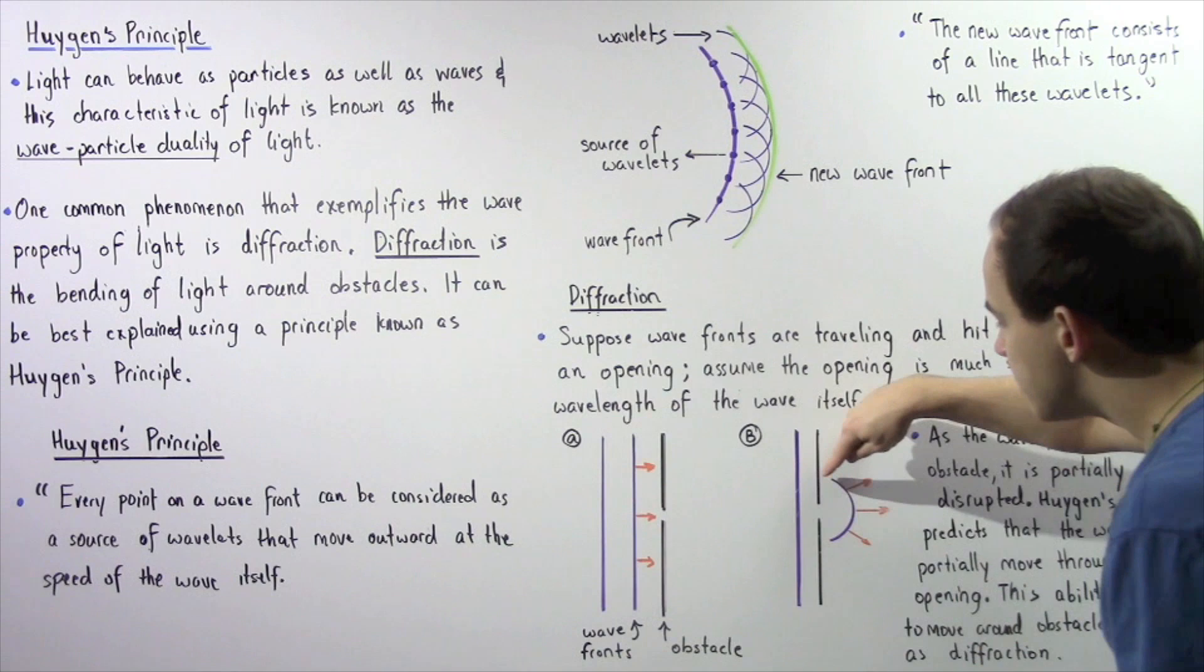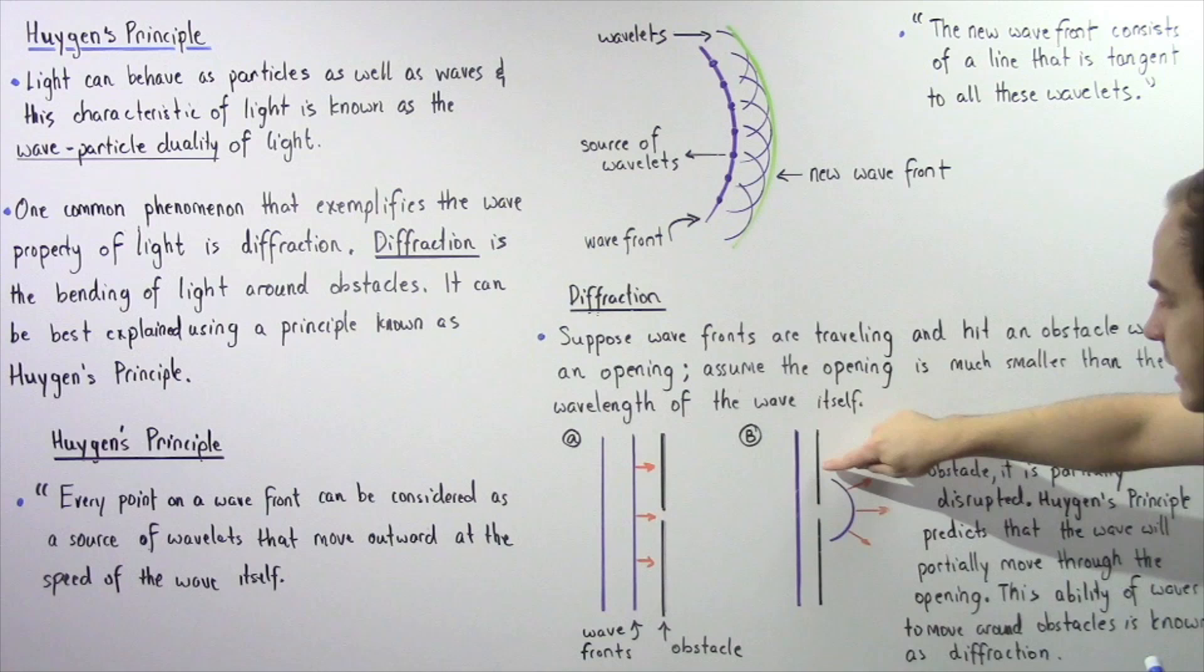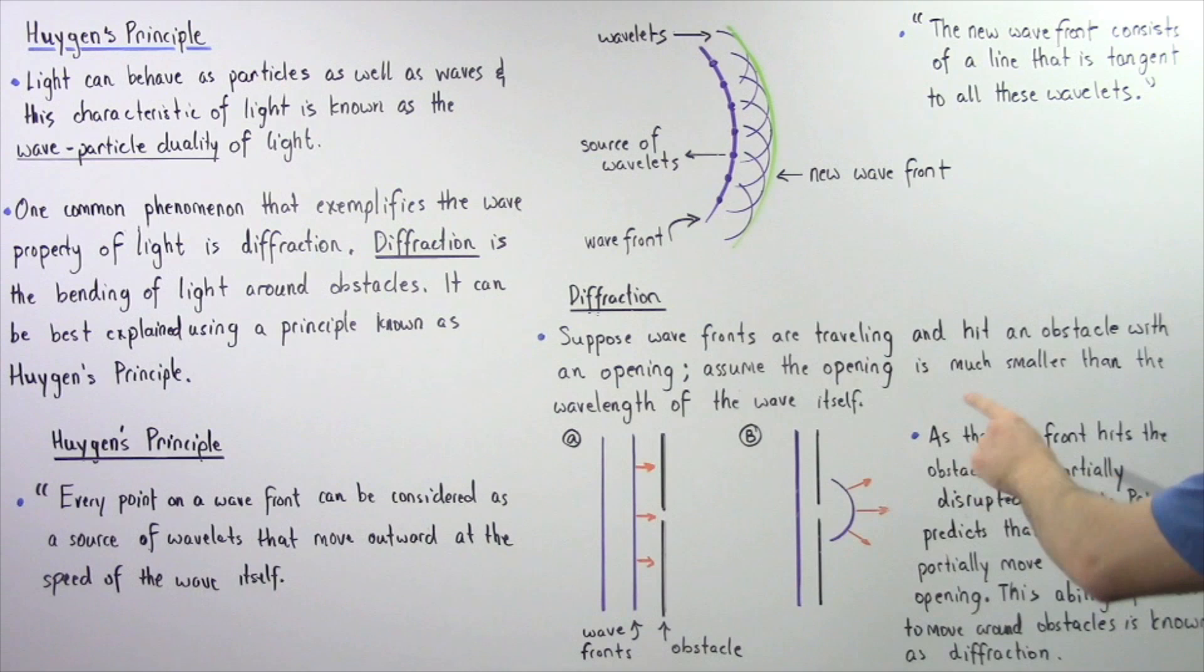As a result of Huygens principle, the following will take place. As a result of these sources, many wavelengths will be formed and these wavelengths will form the new wave front as shown by the following circular region.